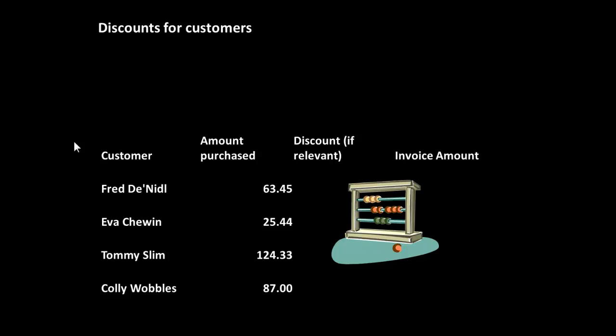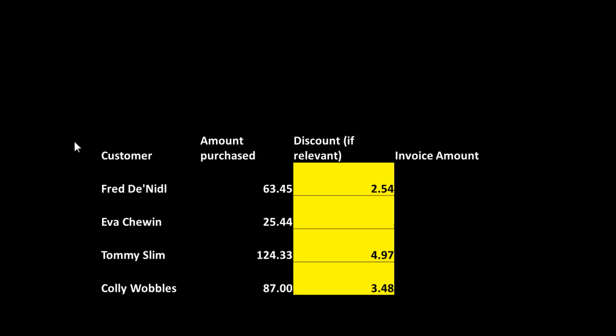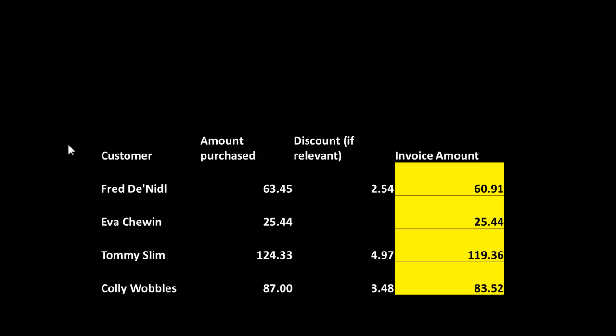Now let's look at discounts for customers — slightly more complex this time. The amount that can be deducted from the usual total is a discount. I have 4 customers and the amounts purchased. The discount only applies if they purchase more than £50 worth, and if they do, they get a 4% discount. I have to determine the amounts to be paid by each customer. Only three of the customers qualify for a discount — Evertuin does not. So I do 4% of the others, and then to get the invoice amount I subtract that. In the first case: 2.54 subtracted from 63.45 gives 60.91, and so on for the other customers.